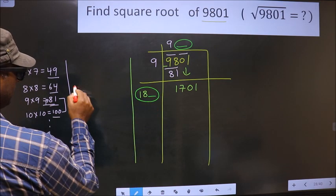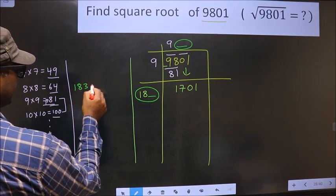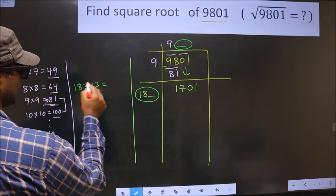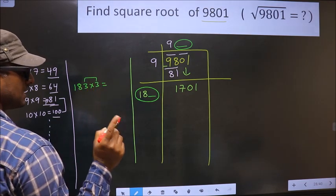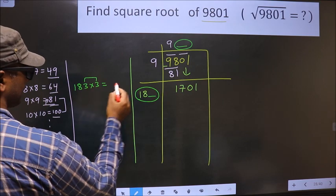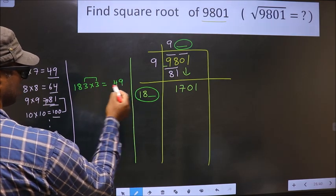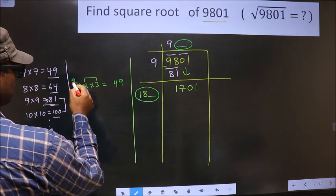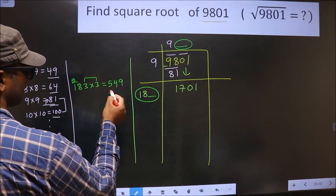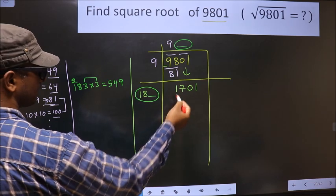So if I take 3, 183 into 3. See, these two numbers should be same. So 3 into 3, 9; 3 into 8, 24. So 4, 2; 3 once, 3, plus 2 is 5. So this is far from this.